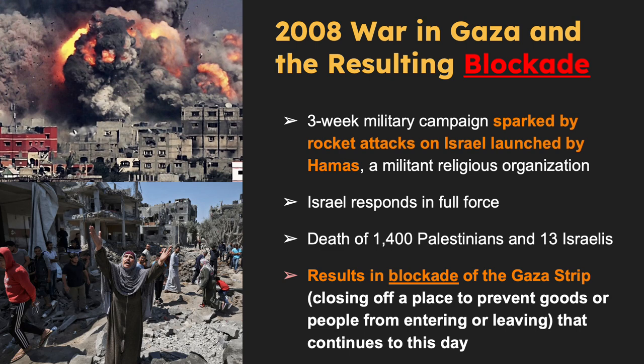2008 War in Gaza: The 2008 Israel-Gaza War, also known as Operation Cast Lead, was a three-week military campaign between 2008 and 2009. It was sparked by rocket attacks on Israel launched by Hamas, Gaza's militant — often called terrorist — leaders. Israel responded with airstrikes, ground troops, and naval bombardment. The conflict resulted in around 1,400 Palestinian deaths, mostly civilians, and 13 Israeli deaths including three civilians. Internationally, people accused Israel of using excessive force and committing war crimes, while Hamas was criticized for rocket attacks and using human shields. The conflict ended with a cease-fire agreement.